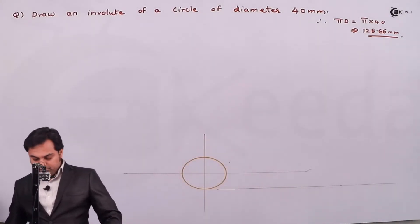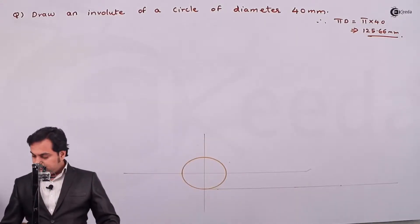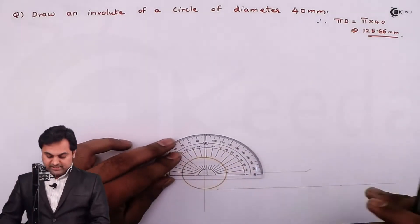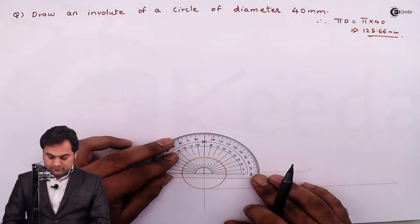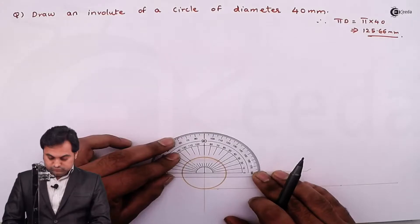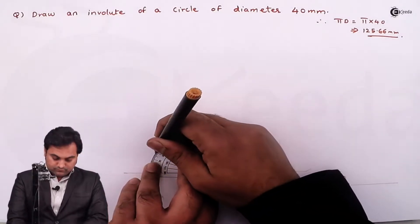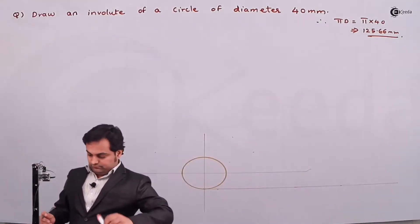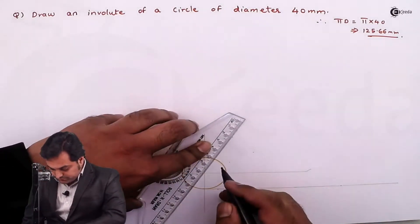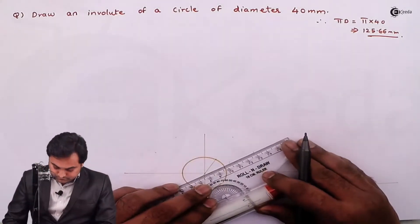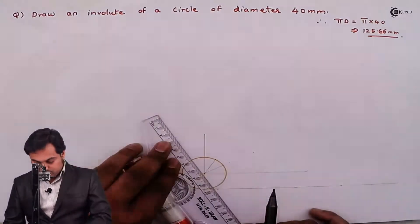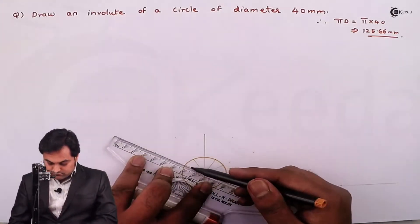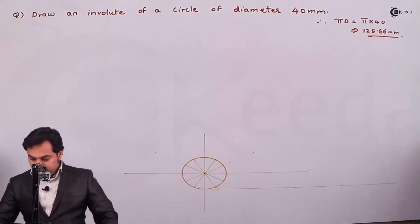Next, I'll divide the circle into 12 equal parts so that we have more points to draw the involute. Each angle will be 30 degrees. Dividing at 30°, 60°, 90°, and so on around the circle.